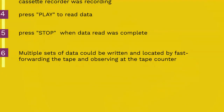Data was stored sequentially, usually in an unnamed format, although some systems did allow files to be named. Multiple sets of data could be written and located by fast-forwarding the tape and observing the tape counter to find the appropriate start of the next data region. The user might have to listen to the sounds to find the right spot to begin playing the next data region. Some implementations even included audible sounds interspersed with the data.